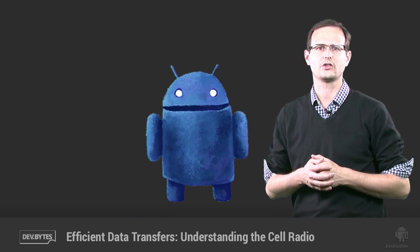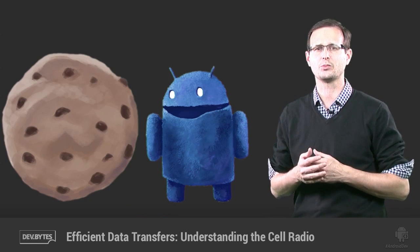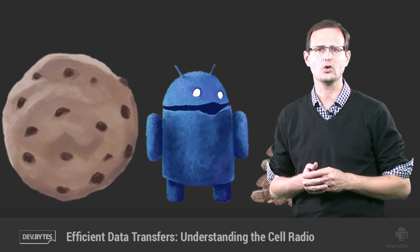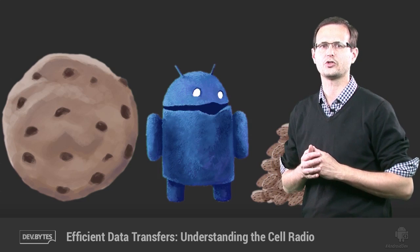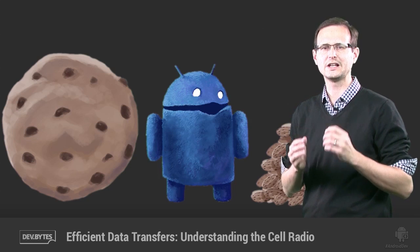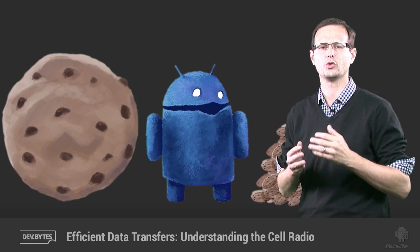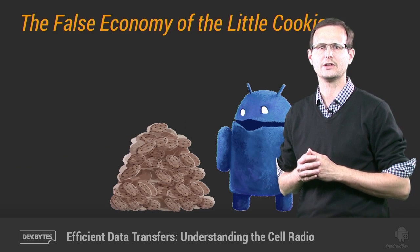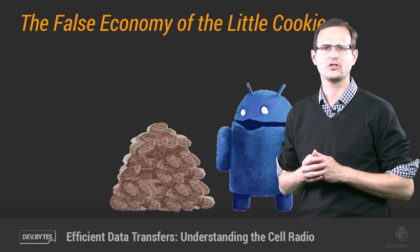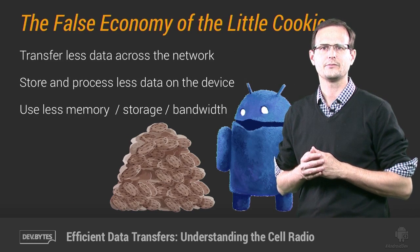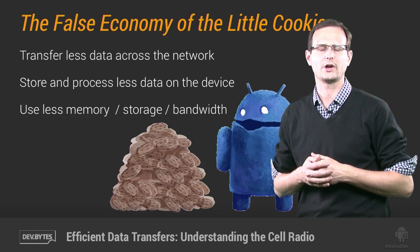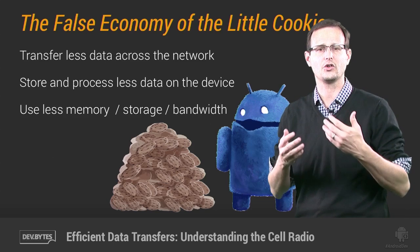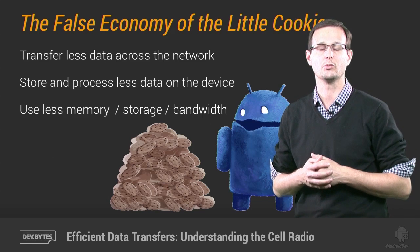The solution comes down to what I like to call the cookie droid conundrum. When scheduling downloads, do you transfer as much as you can as infrequently as possible, minimizing the number of transfers at the expense of bandwidth? Or do you take the opposite approach, transferring as little as possible and performing transfers more frequently? On the surface, the little cookie model appears sound. Less data transferred means less bandwidth and less time spent with the radio active to transfer data. And because we're downloading what we need on demand, we never download and process more than we need.